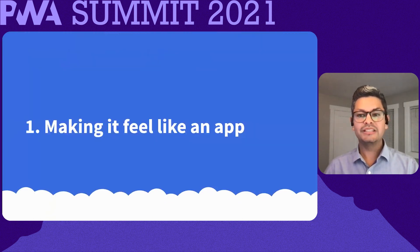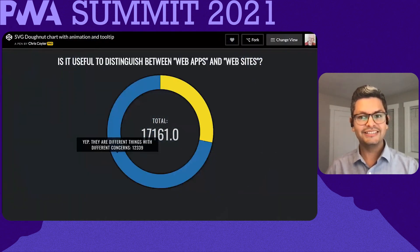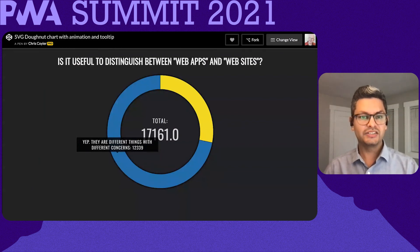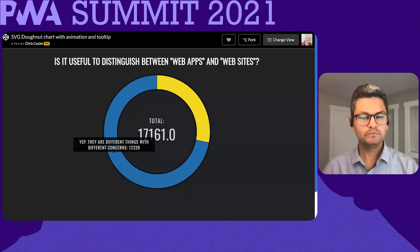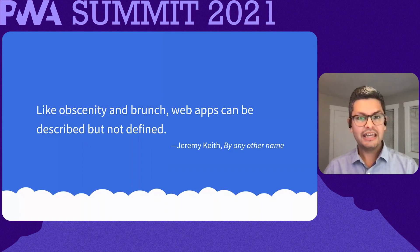What does it mean to make something feel like an app? A couple of years ago, Chris Coyer surveyed readers on CSS Tricks and asked them if it is important to distinguish between web apps and websites. 72% answered yes, they are different things with different concerns. But despite the fact that most people agreed that they are different, in the comments it was clear that no one agreed how they are different. As Jeremy Keith once put it, like obscenity and brunch, web apps can be described but not defined.